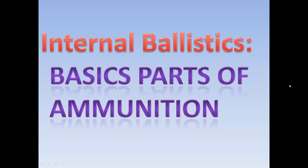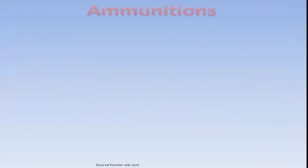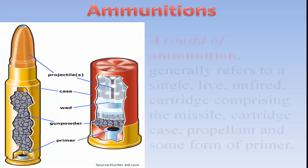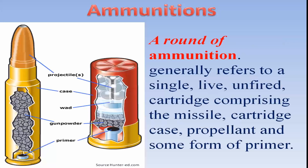In this video we are going to study about parts of ammunition. When you see a bullet, that bullet is not only one thing — it is the whole assembly of cartridge case, primer, propellant, and bullet. The whole assembly consisting of primer, propellant, cartridge case, and bullet is known as ammunition.